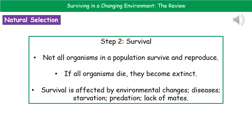The second step goes some way to explaining why, and that's all to do with survival. In that population, not all of the organisms will be able to survive and therefore reproduce. If all of the organisms of a particular population die, they will become extinct. Survival will be affected by a variety of different things — changes to the environment, diseases, starvation, predation, or a lack of mates. Any of those would affect the organism's ability to survive and therefore to reproduce.